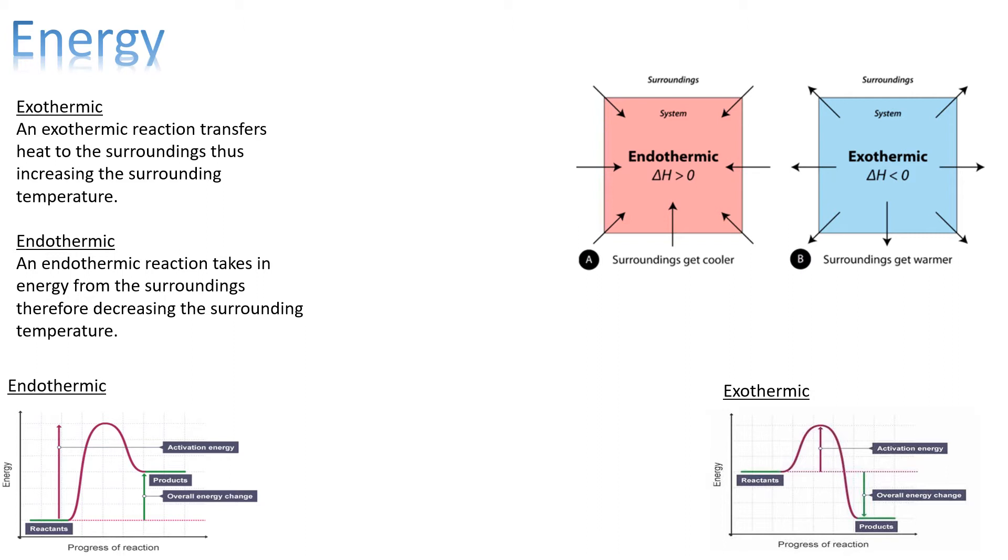Exothermic: you can see the reactants are higher in energy than the products, thus the reaction will give out energy. Delta H is always positive for endothermic and always negative for exothermic.